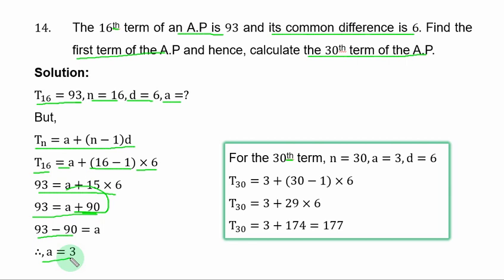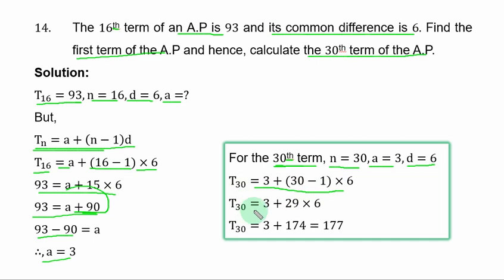Now A is known and the common difference is also known, so we can find the 30th term. At the 30th term, N equals 30, A equals 3, and D equals 6. In the same formula, replacing N with 30, A with 3, and D with 6, we get T sub 30 equals 3 plus 29 times 6. Multiplying before adding, T sub 30 equals 3 plus 174, which is 177, as the 30th term of the AP.